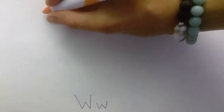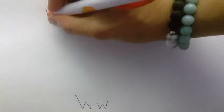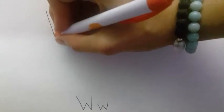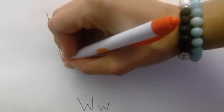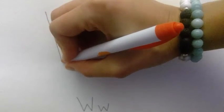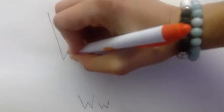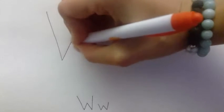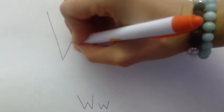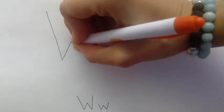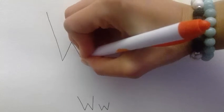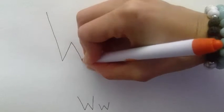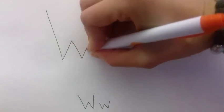Starting at the top of your page, you're going to draw a long line down with a little bit diagonal. Draw a short diagonal line up, draw a short diagonal line down, and a long line up like that.